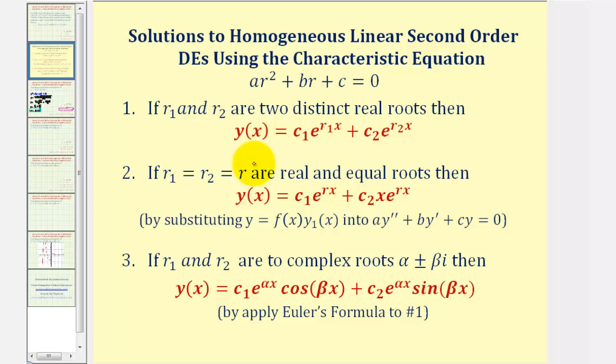And now let's review the different forms of general solutions. So in our case, when the characteristic equation has complex roots in the form of alpha plus or minus beta i, this will be the form of the general solution.